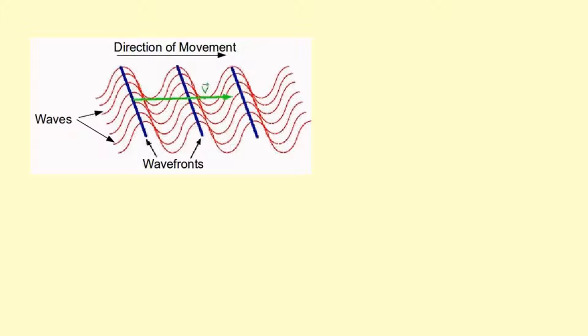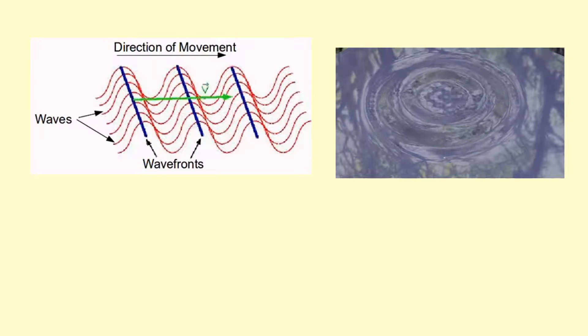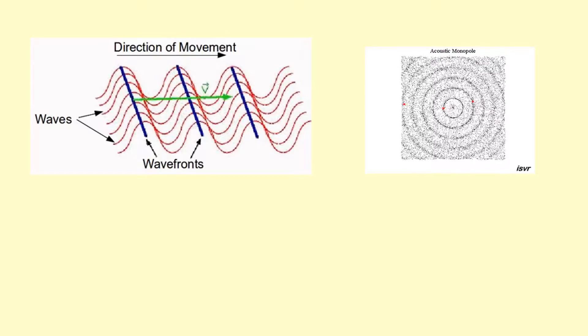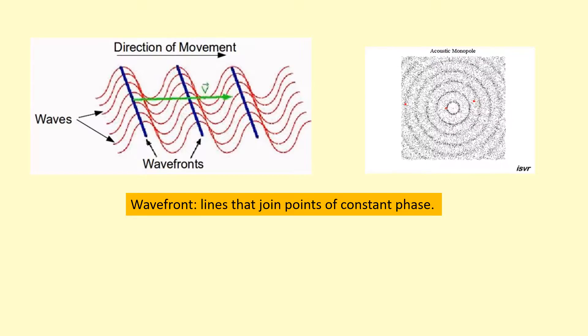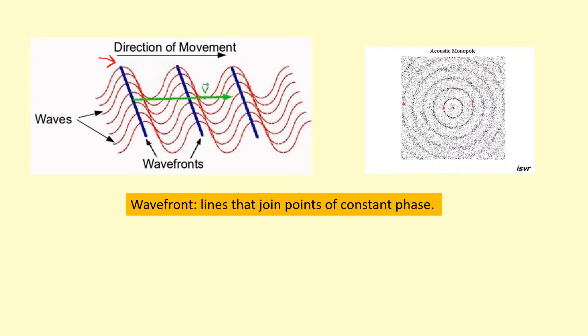To understand refraction, we're going to look at something called wavefronts. Now, you've already seen wavefronts, for example, when you drop a pebble in water, these circular lines are spreading out. And what they are, are lines that join points of constant phase. For example, in this diagram, the wavefront is showing all the peaks of the waves joined together.